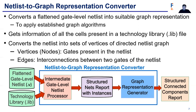The high-level overview of the netlist-to-graph representation converter is shown here. The intermediate gate-level netlist processor takes these two inputs and converts the netlist into an intermediate representation, shown here as a structured nets report with instances, which is utilized by the graph representation converter. Finally, the structured connected components report, which is the graph representation of the entire netlist, is generated as the output.